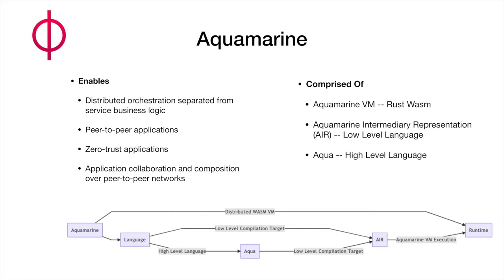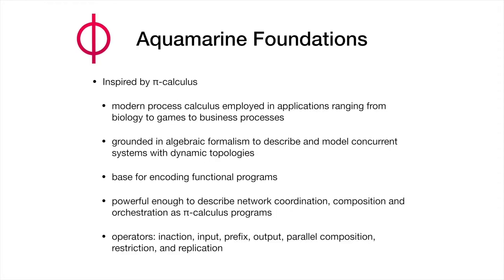In order to get all this done, you need a solid foundation. Our solid foundation is inspired by pi calculus. Pi calculus gives you the mathematical tools to describe and model concurrent systems with dynamic topologies. Everything else is wonderful, but being able to model dynamic topologies is huge. The reason is that in peer-to-peer distributed networks, peers come and go — it's expected behavior, not exception behavior. That makes it very tricky and difficult to model. Pi calculus gives you a formal framework to deal with those kinds of shifting and evolving networks.